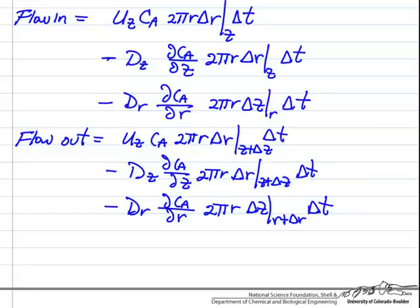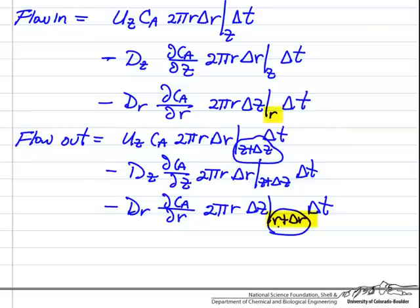The flow out terms are the exact same terms; the only difference is we're evaluating at a different point. Here we're evaluating at z plus delta z — so flow in at z, flow out at z plus delta z downstream. Likewise, flow in at r, flow out at r plus delta r.